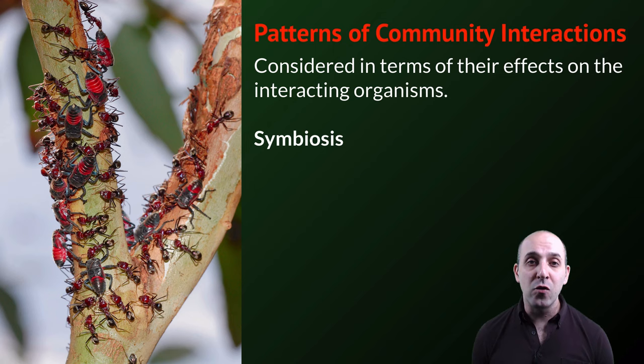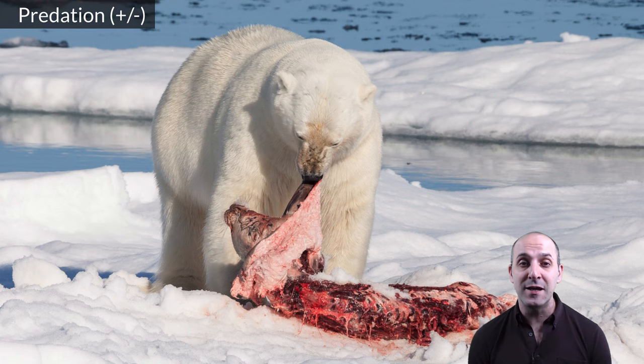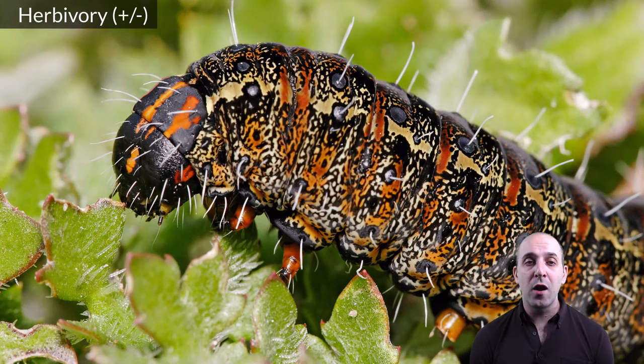The major way we do this is by thinking about the interactions between two different populations of organisms and the effects of those interactions. Here are some of the major types of community interactions. We can have predatory interactions, where one organism benefits — the predator — and the other one is harmed — the prey. Similar to predation is herbivory, where the predator is an animal and the prey is a plant, but it's the same pattern of effects that we would see.